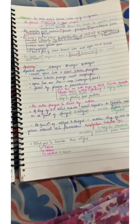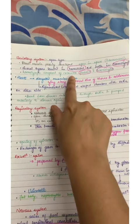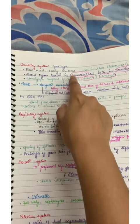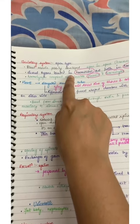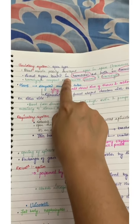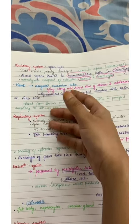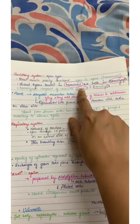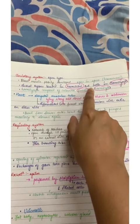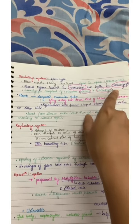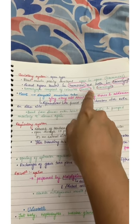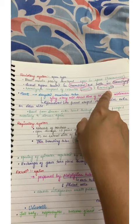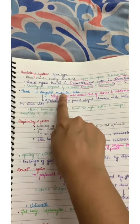After that we come to the circulatory system which is open type. Blood vessels poorly developed. Open type means blood will be in open space called hemocoel. Visceral organs located in hemocoel are bathed in hemolymph. Hemolymph composed of colorless plasma and hemocytes.